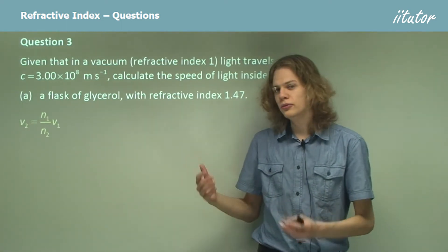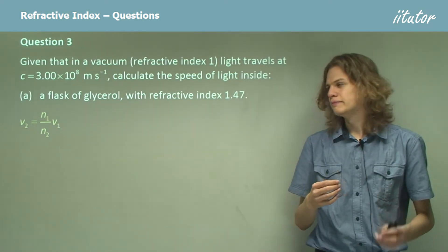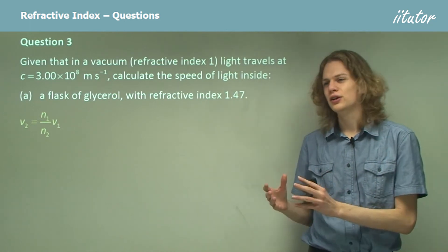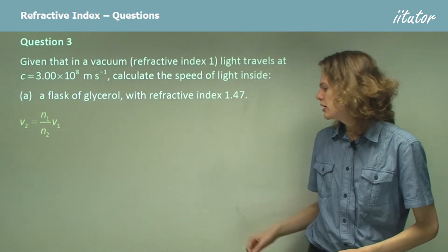Of course, if we wanted, we could, instead of using C, rather, use the speed of light in a vacuum and the refractive index of a vacuum. And that's what we've done here. In this case, of course, the refractive index of the vacuum is 1.